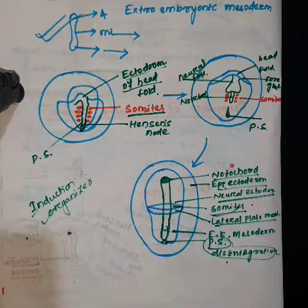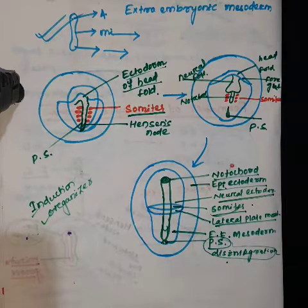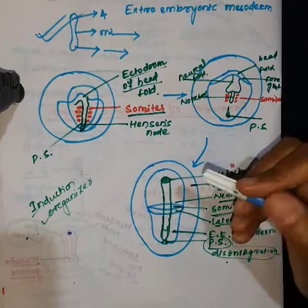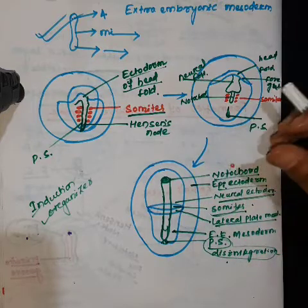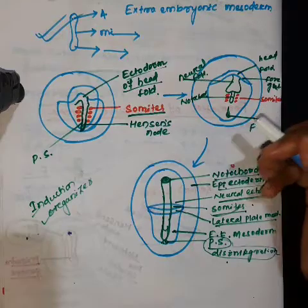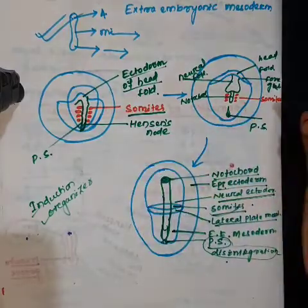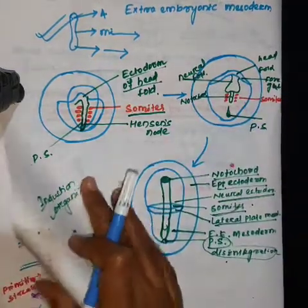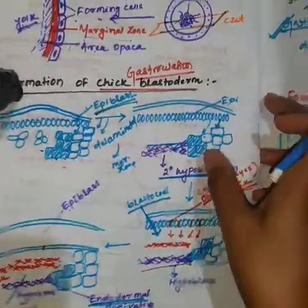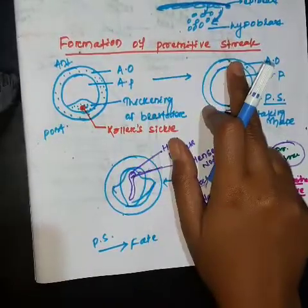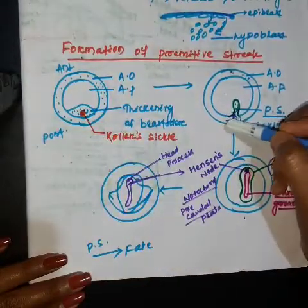In our last lecture we discussed the gastrulation process in the chick embryo, including the role of the primitive streak and how it is formed. We also saw that the epiblast cell is the sole region for formation of different parts of the embryo. Next, we will discuss the elongation of the primitive streak — how it elongates and which parts of the embryo are formed.